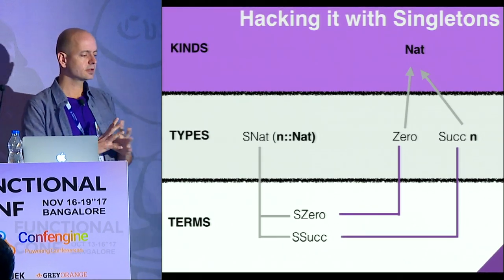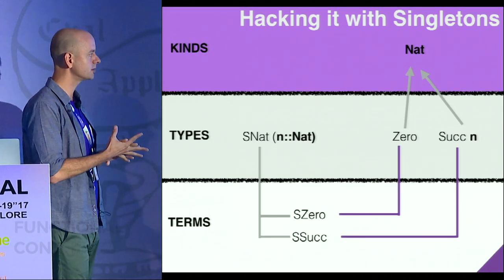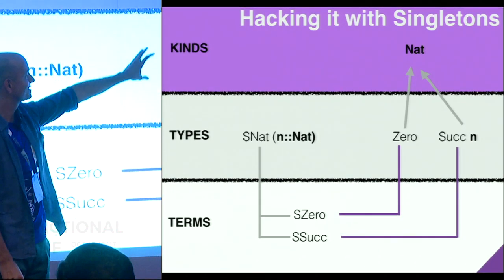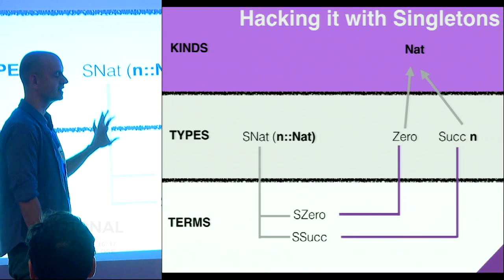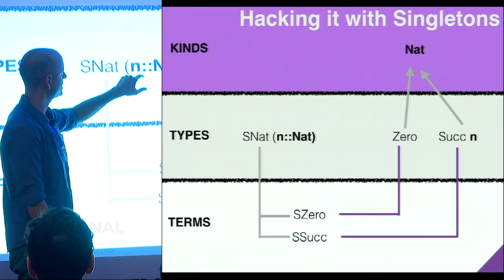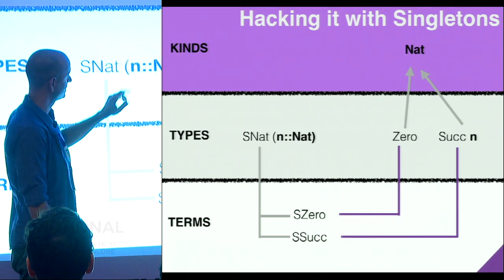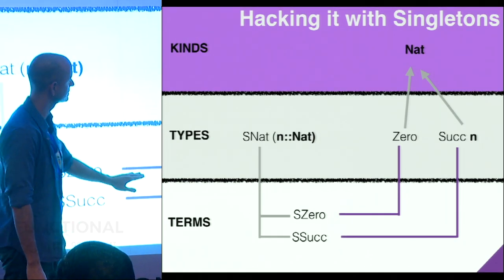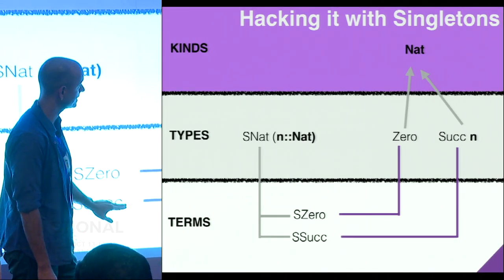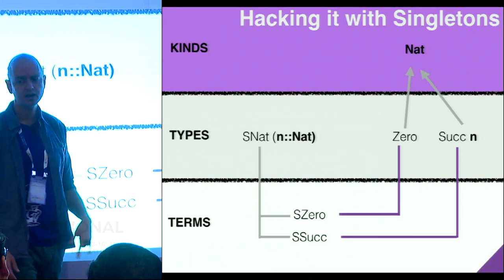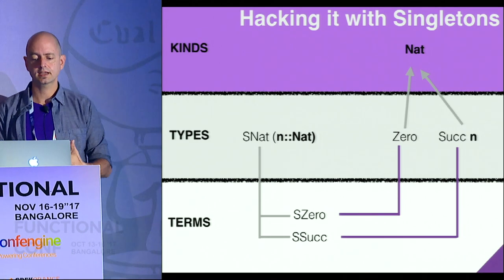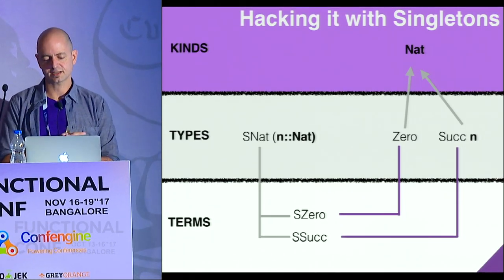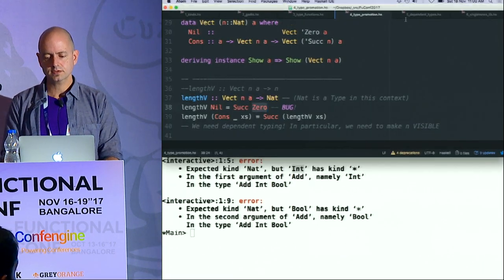We write a wrapper type — a regular type — to wrap that type of that kind. We have regular terms; the S is for singleton. This is called a singleton pattern. Using Generalized Algebraic Data Types again, we're binding terms with types. Singletons at first look like a terrible hack, and then the more you look at it, it's very ingenious the way it uses the type system. But it is a hack.